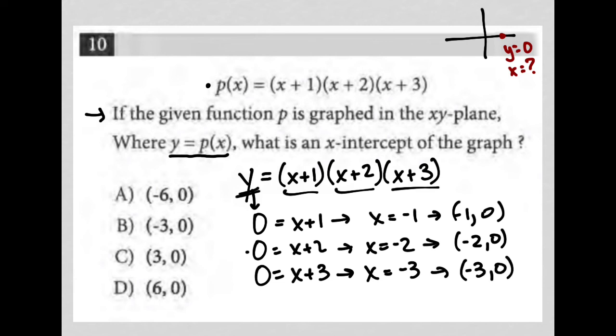So what is an x-intercept of the graph? Negative 6, 0? No, that's not one of the options. Negative 3, 0? Yes. That, in fact, is what we got here. It's our third option, our third example. 3, or positive 3, 0? No. And positive 6, 0? No. So choice B is the correct answer to this question.